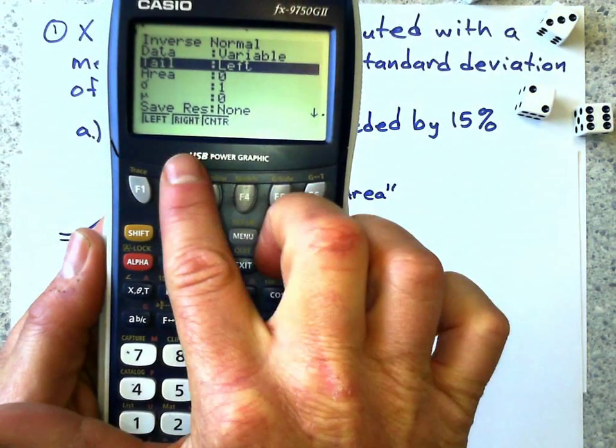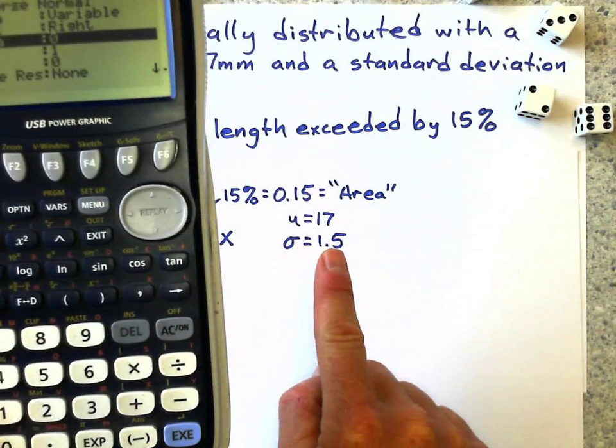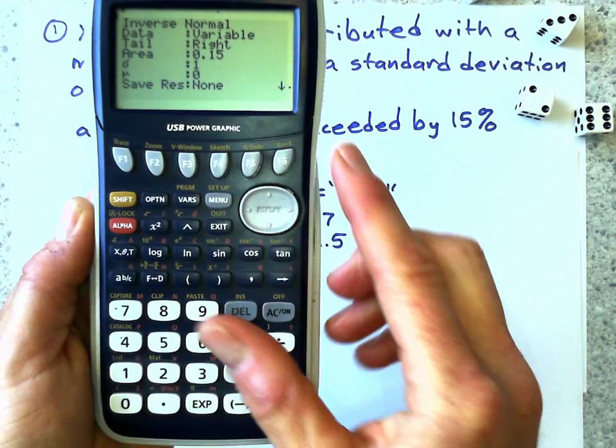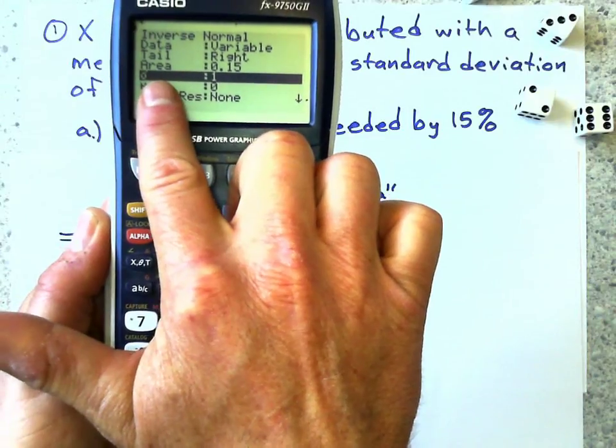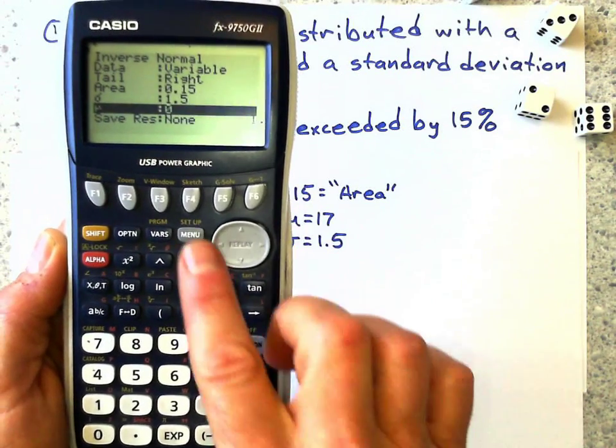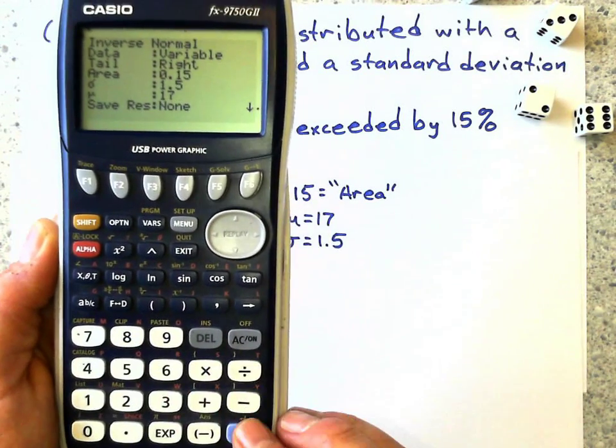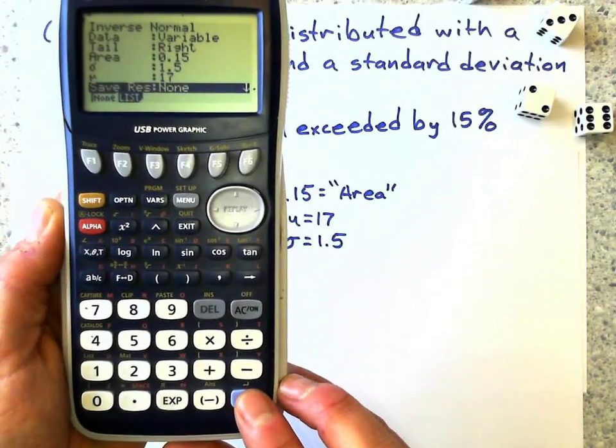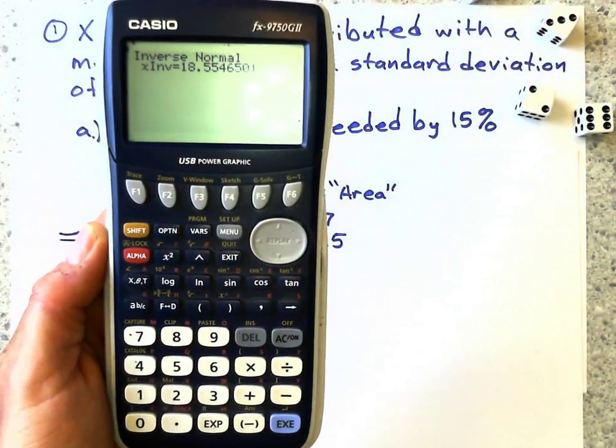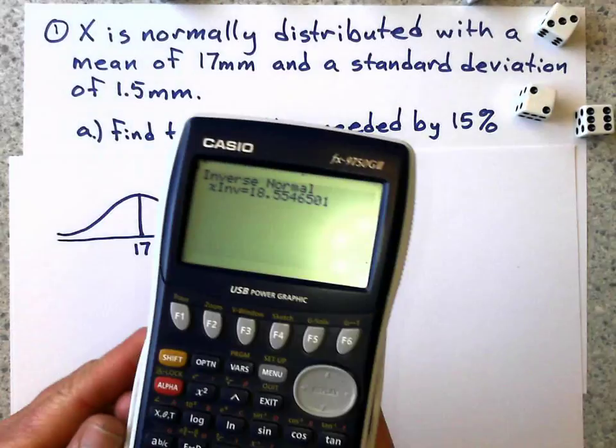So I scroll down to there, and I want right tail. My area represents the probability 0.15, execute. That is my standard deviation, which is 1.5, execute. And my mean was 17, okay? Now I press Execute, press Execute again. And what I get is the value that represents the actual measurement, which is to two decimal places, I get 18.55.